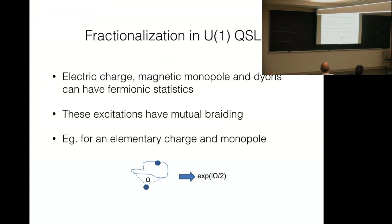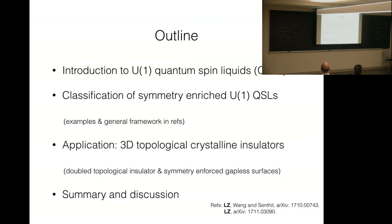More precisely, the excitations, electric charges, electric monopoles, and dyons, can have fermionic statistics, although they emerge from a purely spin system. What's more interesting may be that these excitations can also have mutual braiding. For example, if I fix the position of an elementary charge here, and I move a monopole around it, then the many-body wave function will accumulate a phase given by that formula, where omega is the solid angle spanned by the trajectory. This is a very quick introduction to the concept. The take-home message is it's not trivial, but not associated with symmetry-breaking, it's associated with fractionalization.